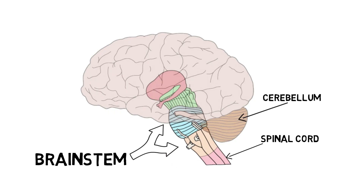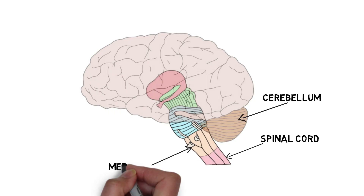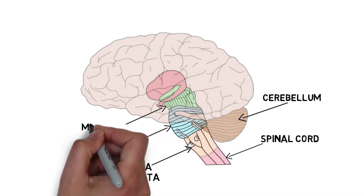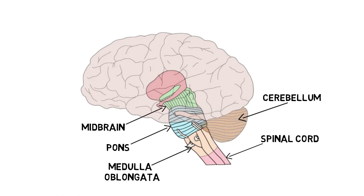It consists of three major divisions: the medulla oblongata, pons, and midbrain. In this video, I will first provide a brief overview of the structures that make up the brainstem, then I will separately discuss the medulla oblongata, pons, and midbrain more in depth.